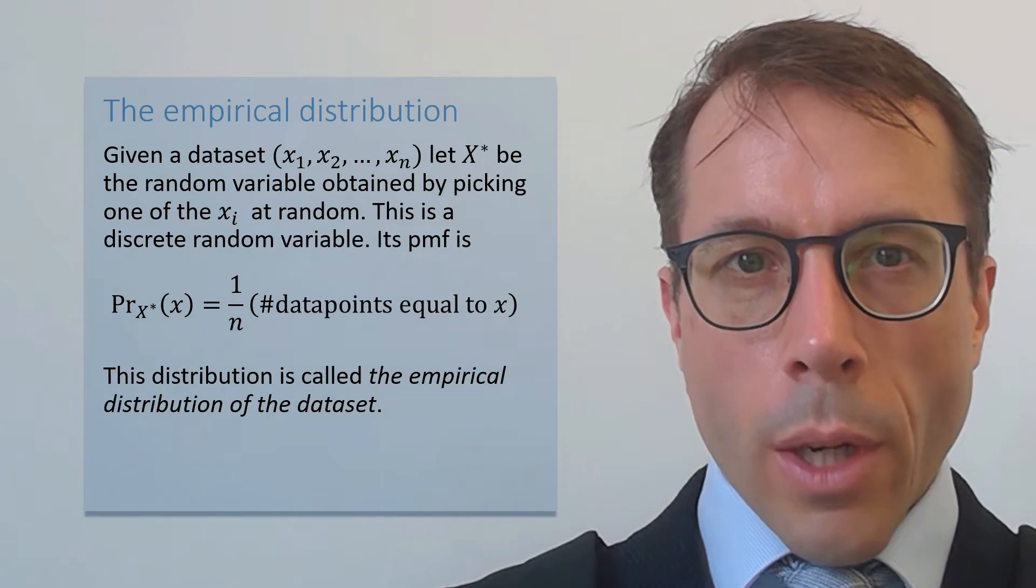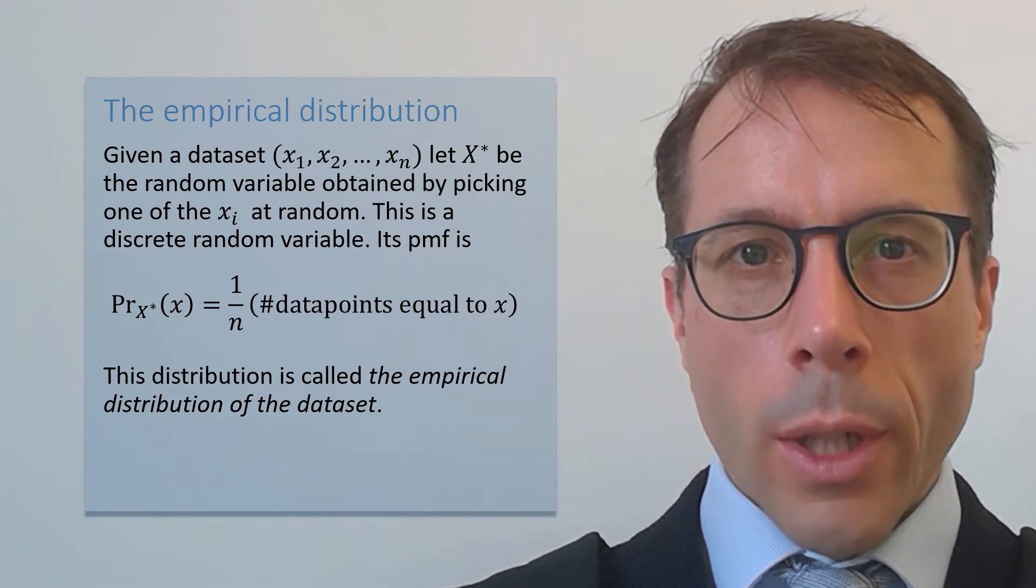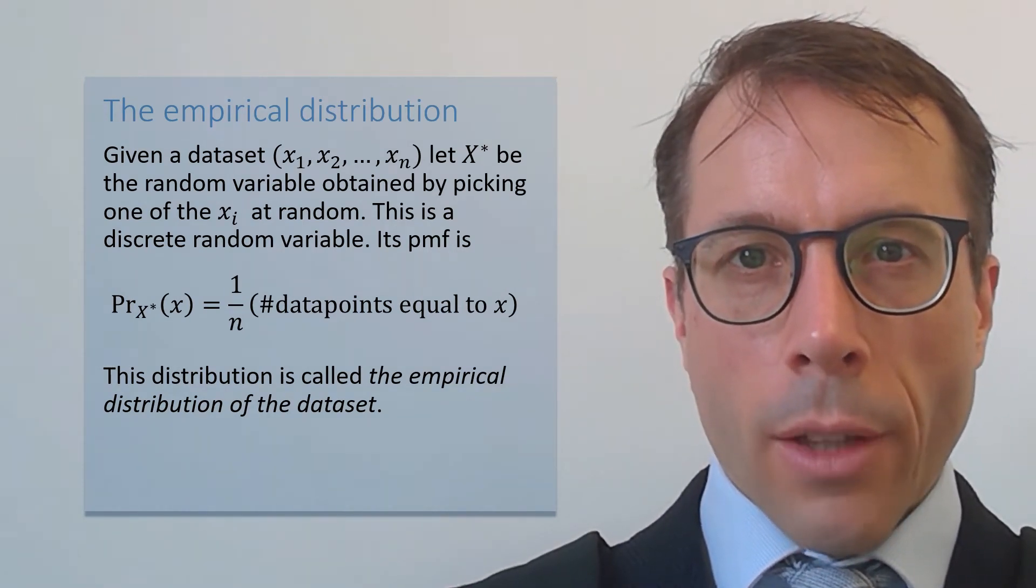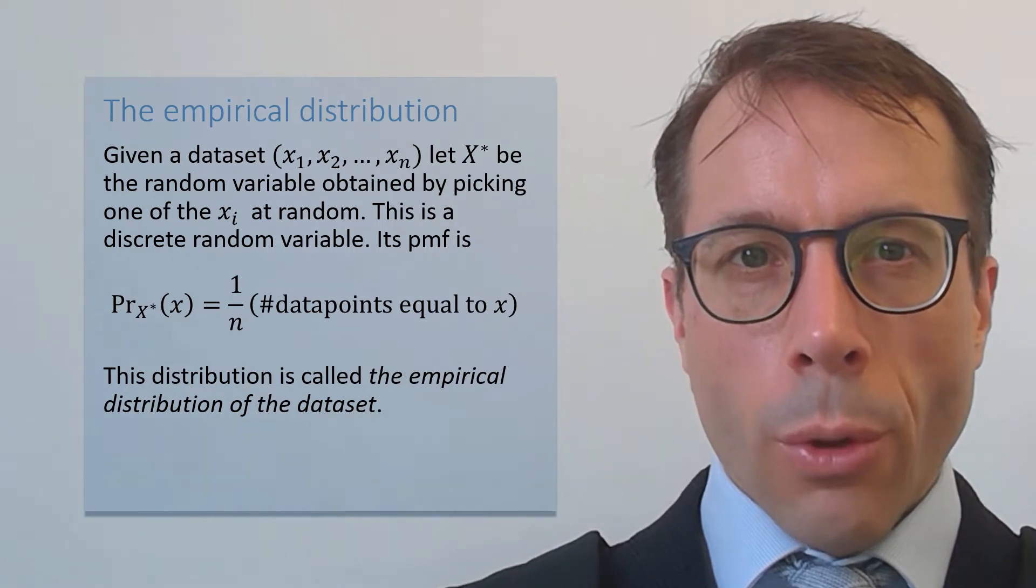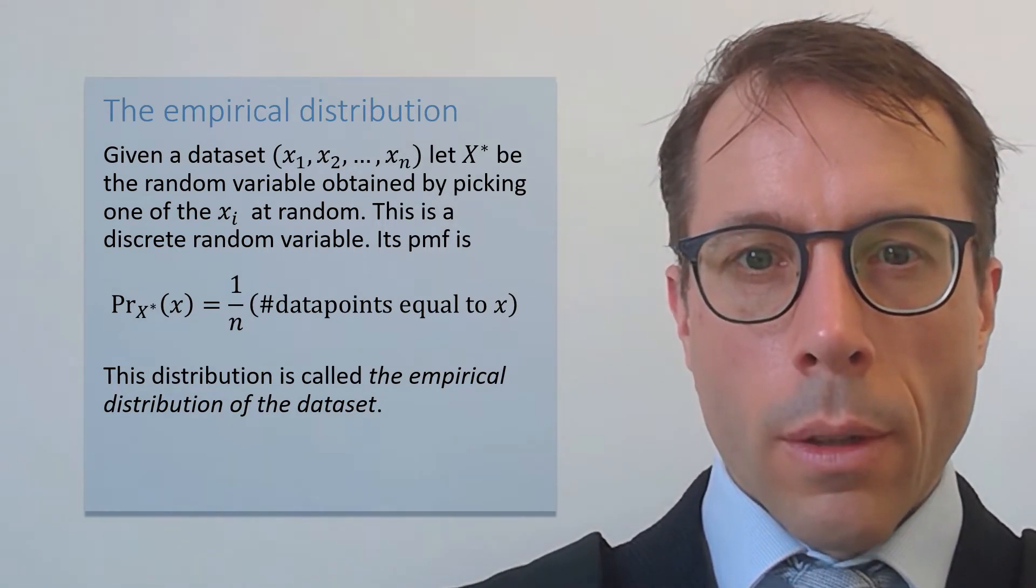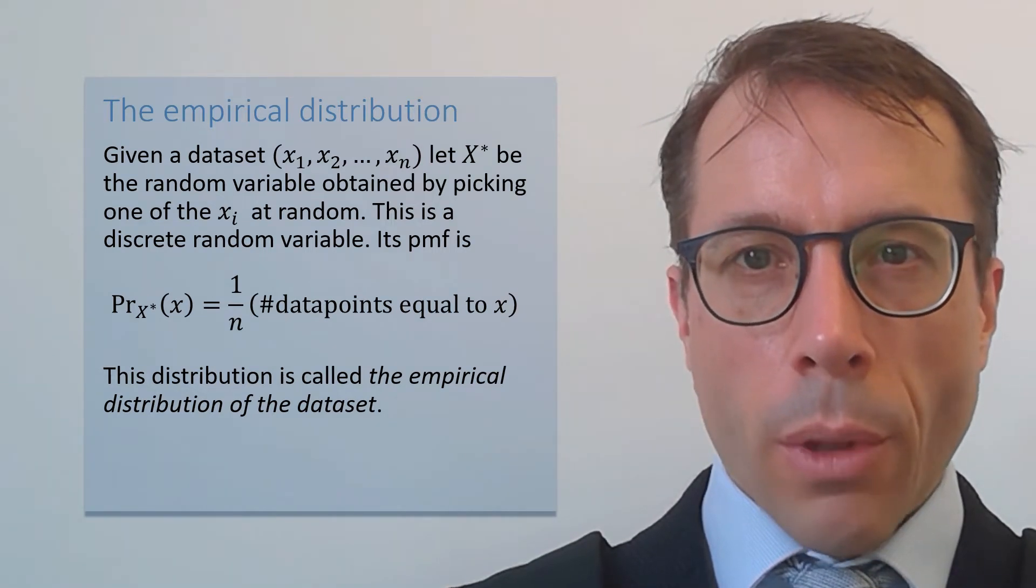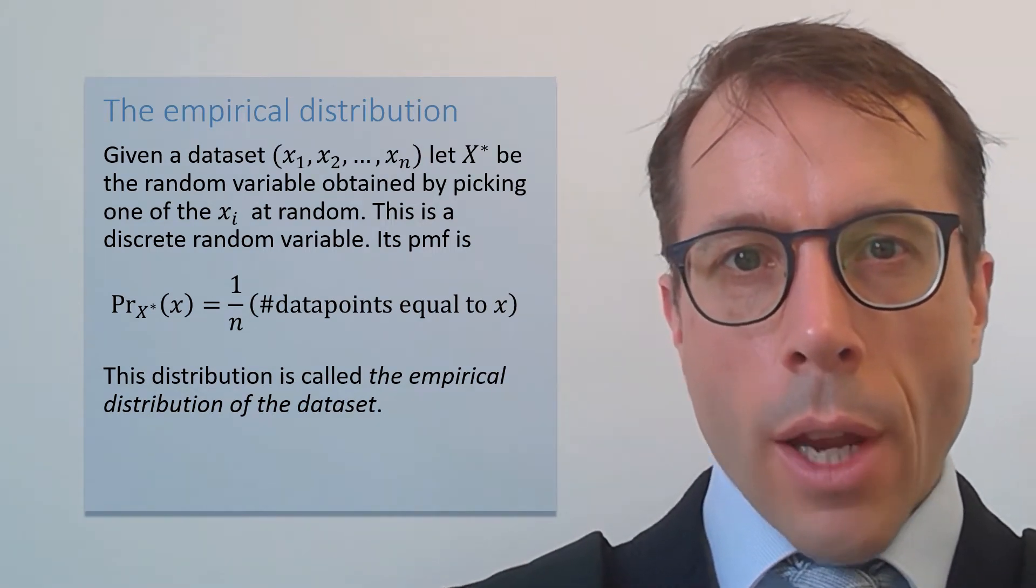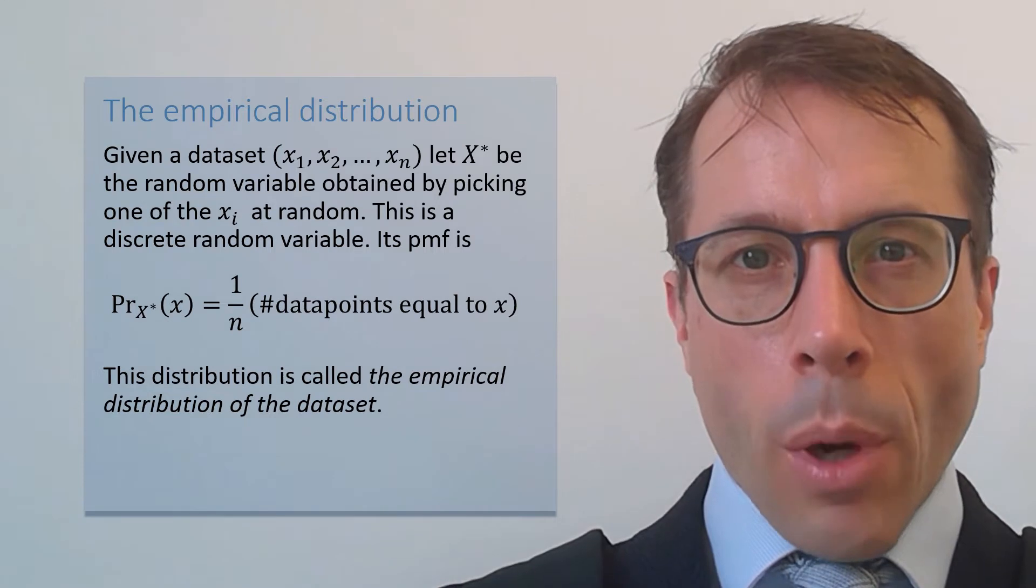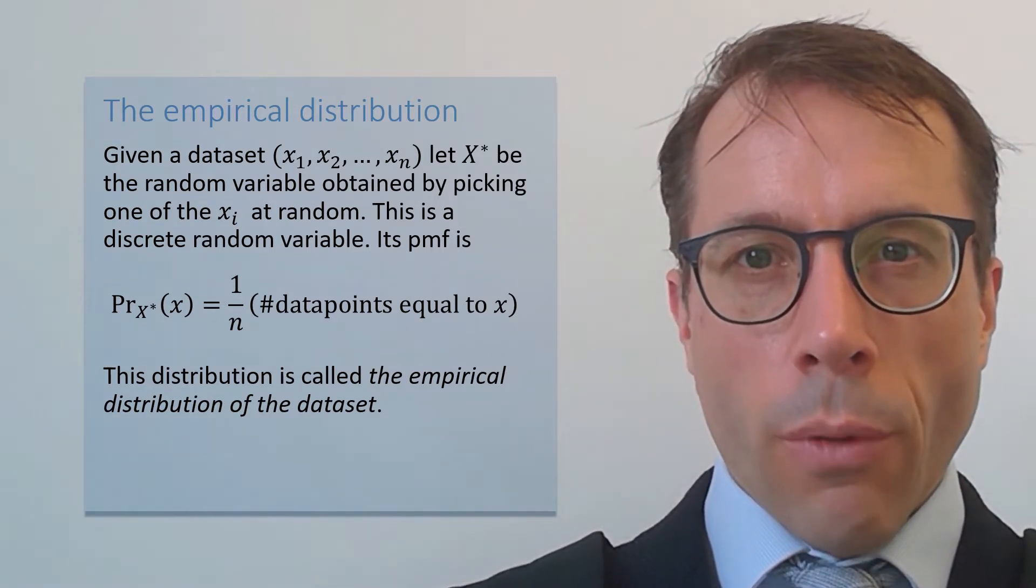If you have a dataset and you pick one of the items at random, all items equally likely, and call this random item x star, then this is called the empirical distribution. It's a discrete random variable, of course, because there are only n possible values it can take, fewer if the dataset has duplicates, and the probability mass function is just this formula here.